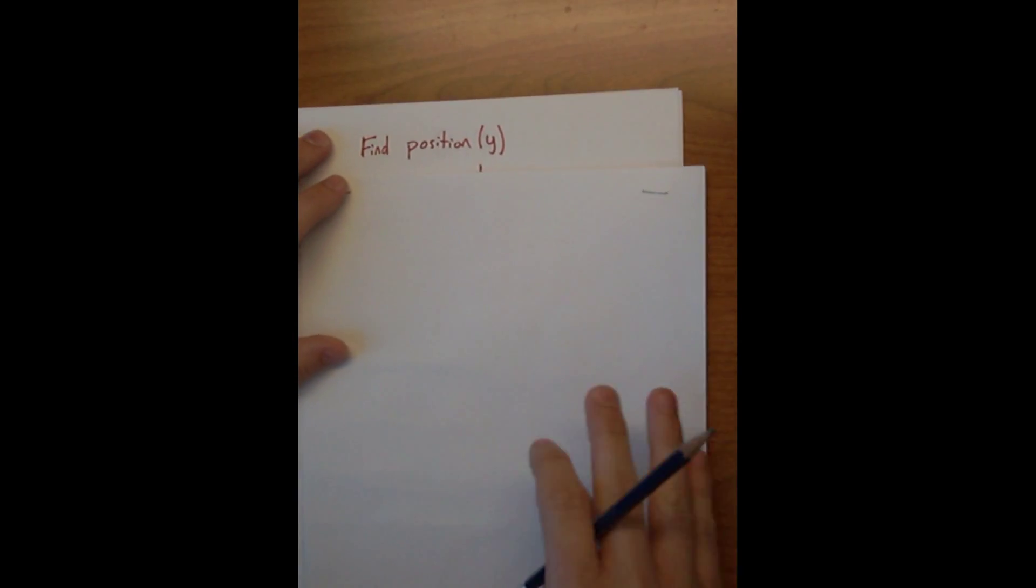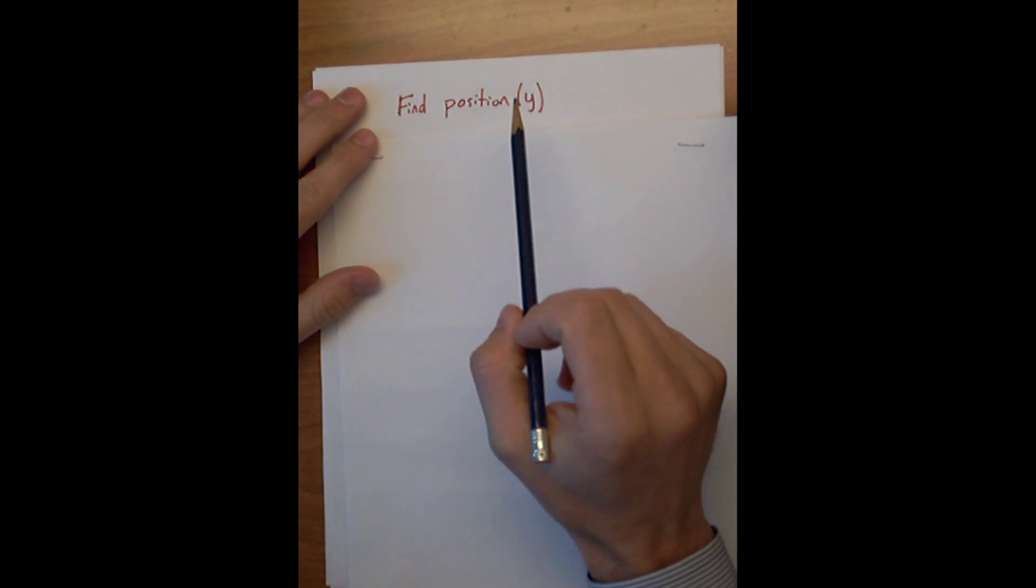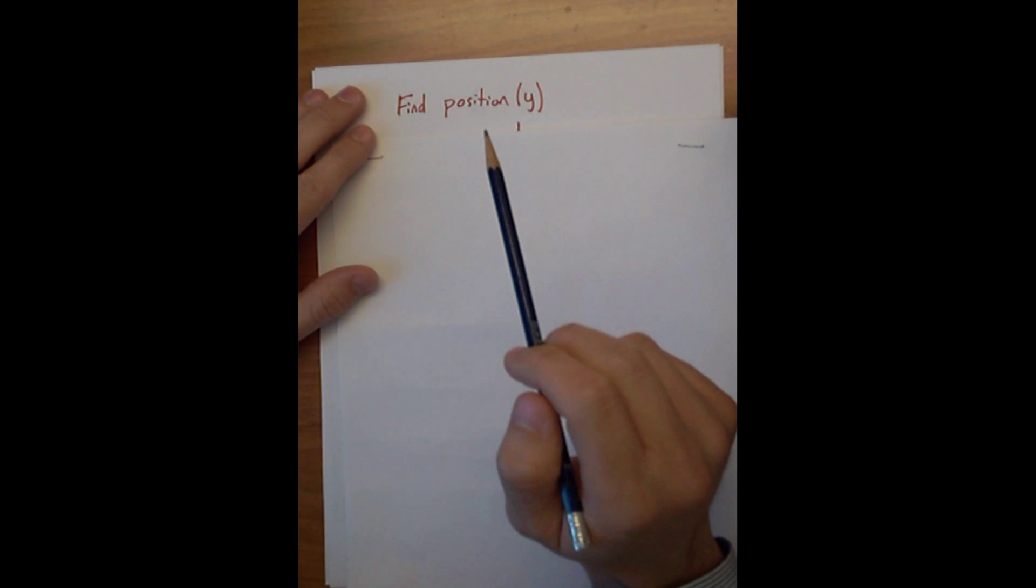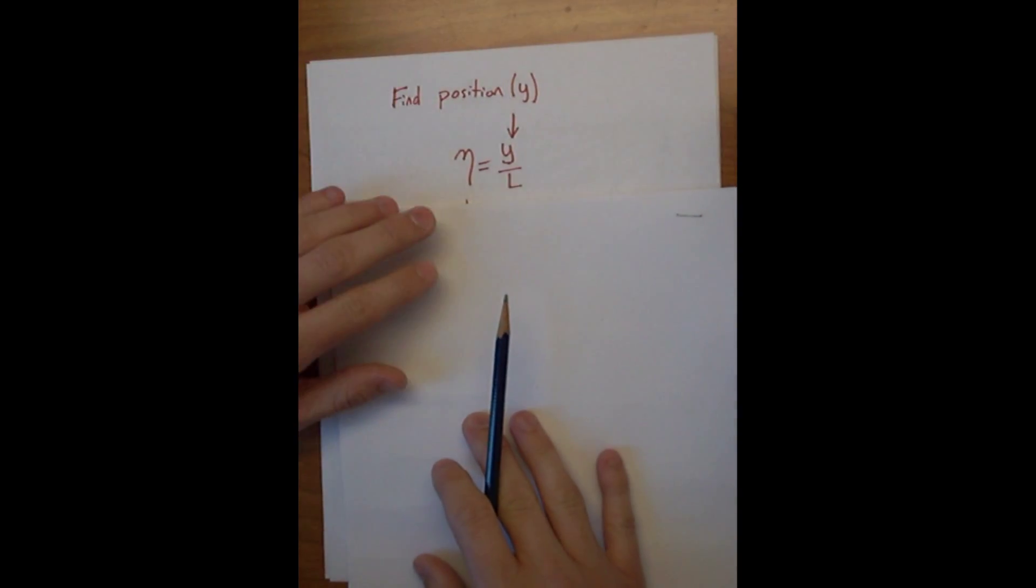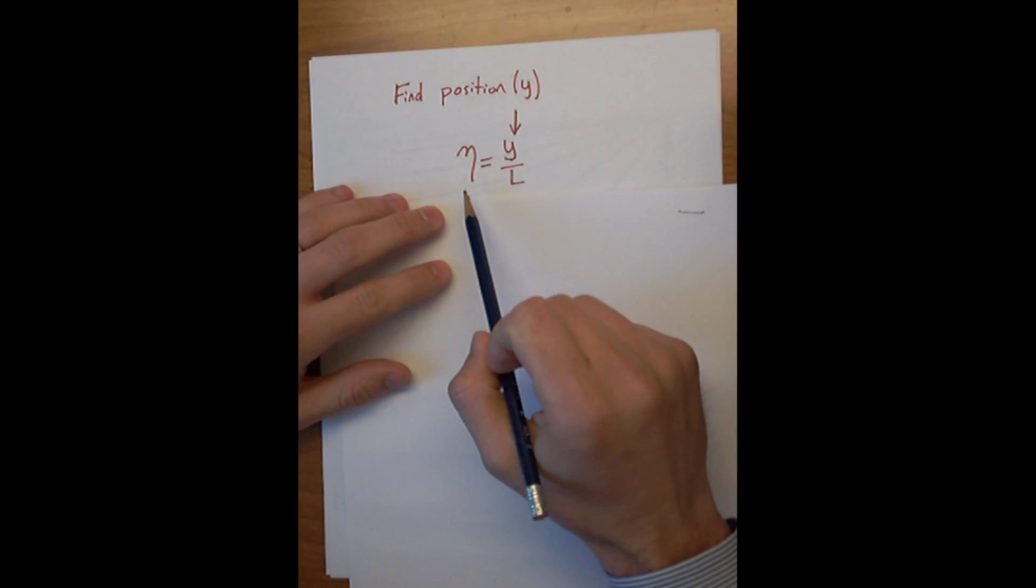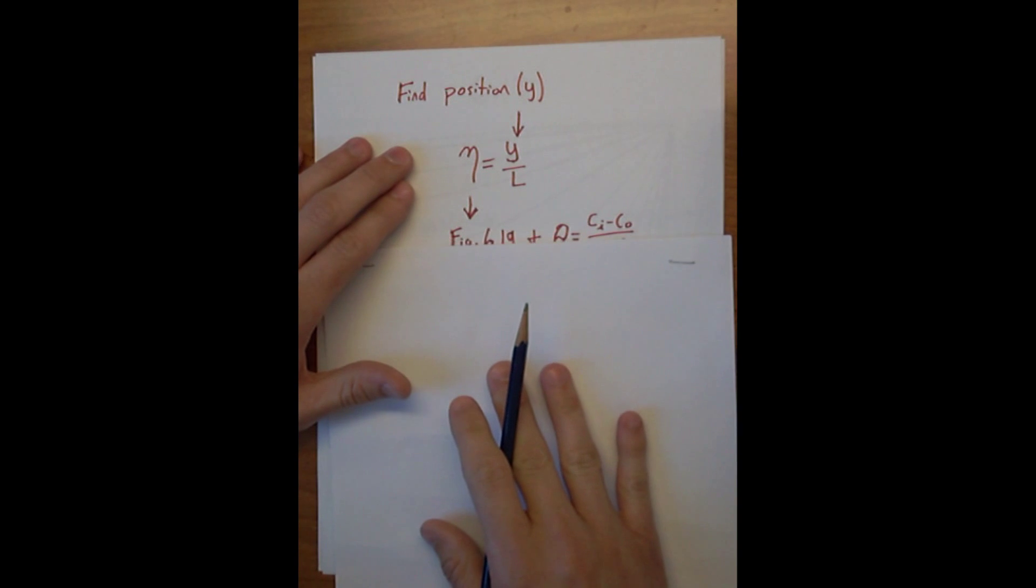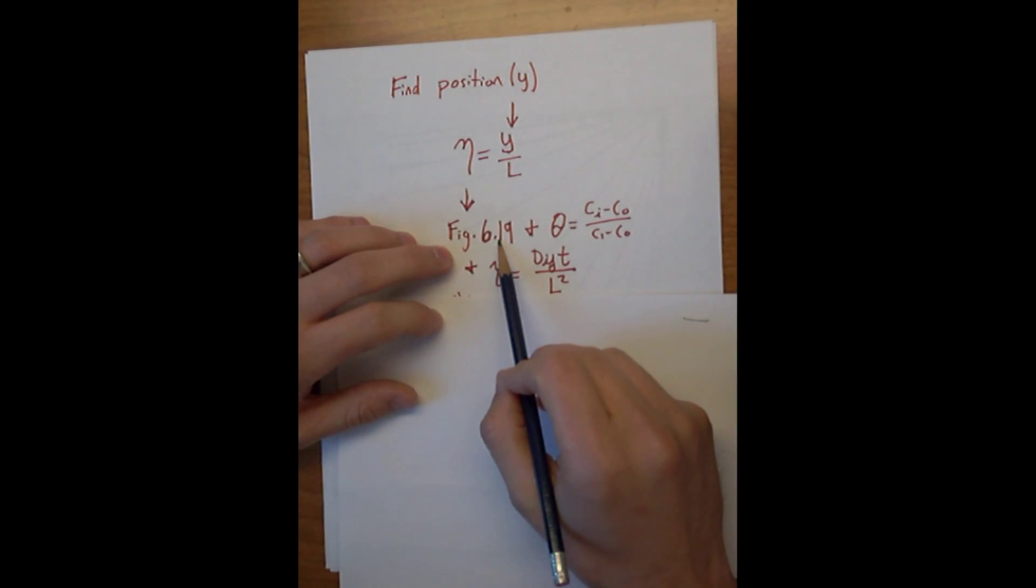So how are we going to do that? Same thinking: first we need to find the position, which the coordinate system has slightly changed—instead of X, we're using Y. To do that, we need to find the non-dimensionalized position. For this case, it's Y over L. And to find that, we're going to use figure 6.19 in the book. We need to know the normalized concentration as well as tau, which is the non-dimensionalized time.